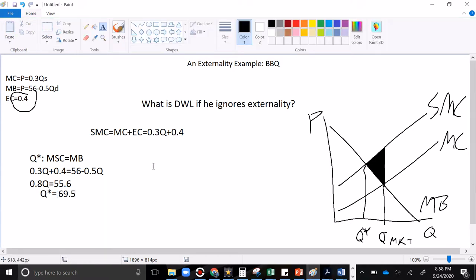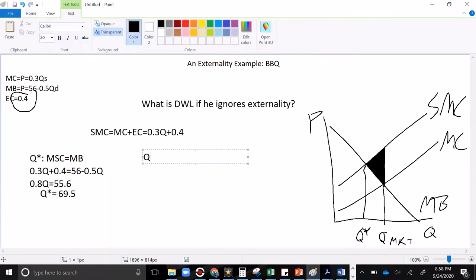What about the market Q? Well, for that, you just set marginal cost equals marginal benefit, and you get 0.3Q equals 56 minus 0.5Q, which gives you 0.8Q equals 56, which gives you Q market equals 70.